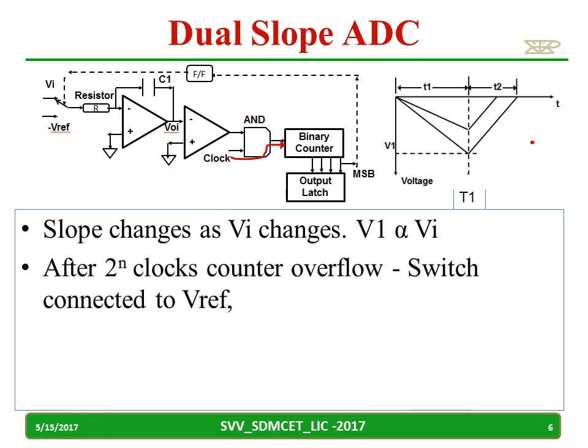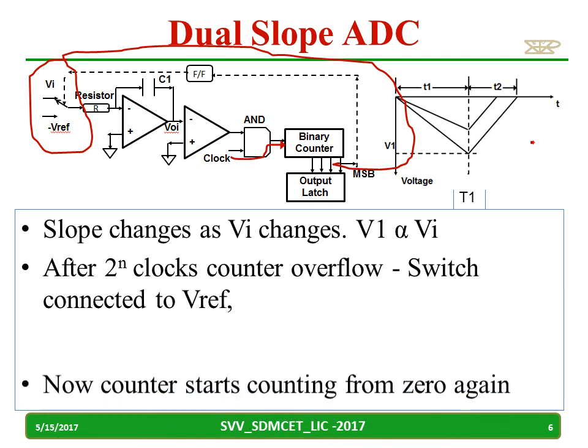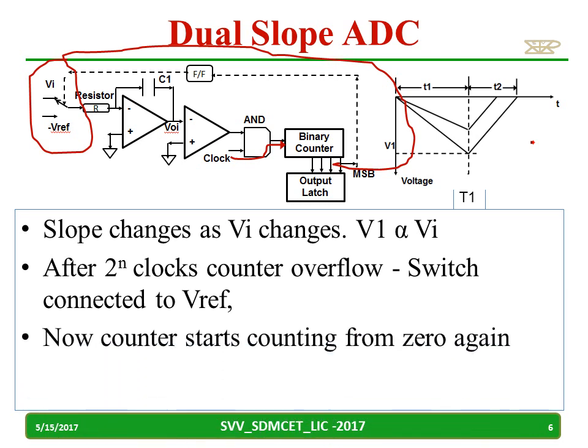After 2 raised to n clock pulses, the counter will overflow. Because of the MSB overflow, the switch is now connected to V reference. The counter starts counting from 0 again because it has just overflowed — it will start again from 0.